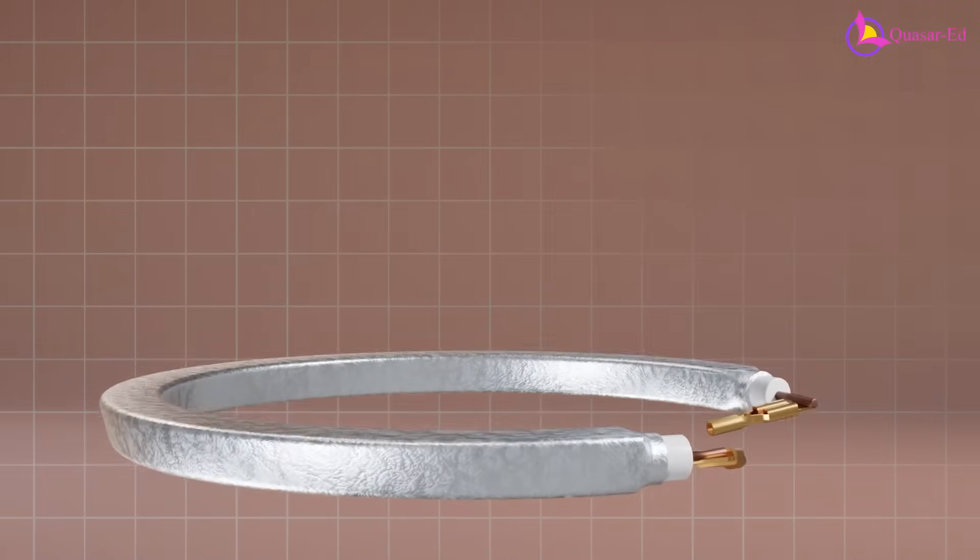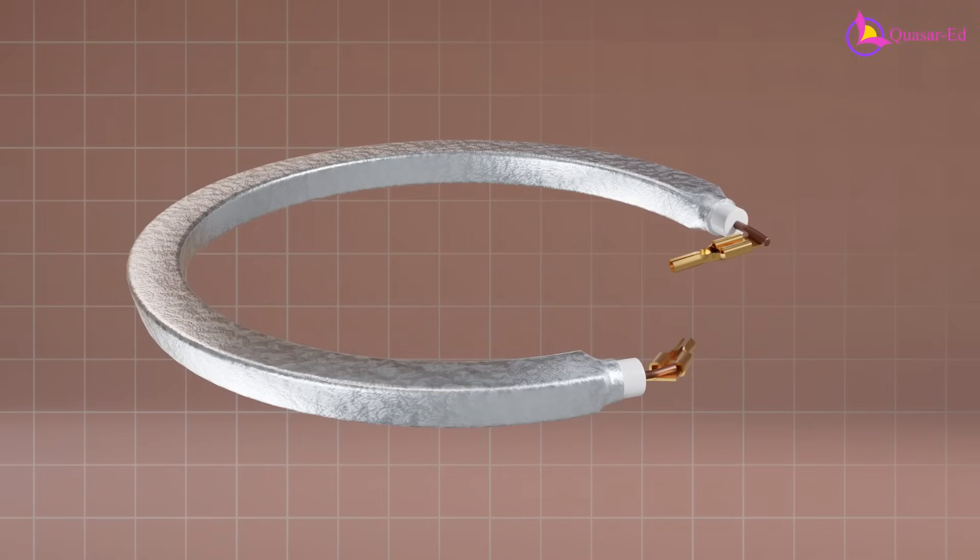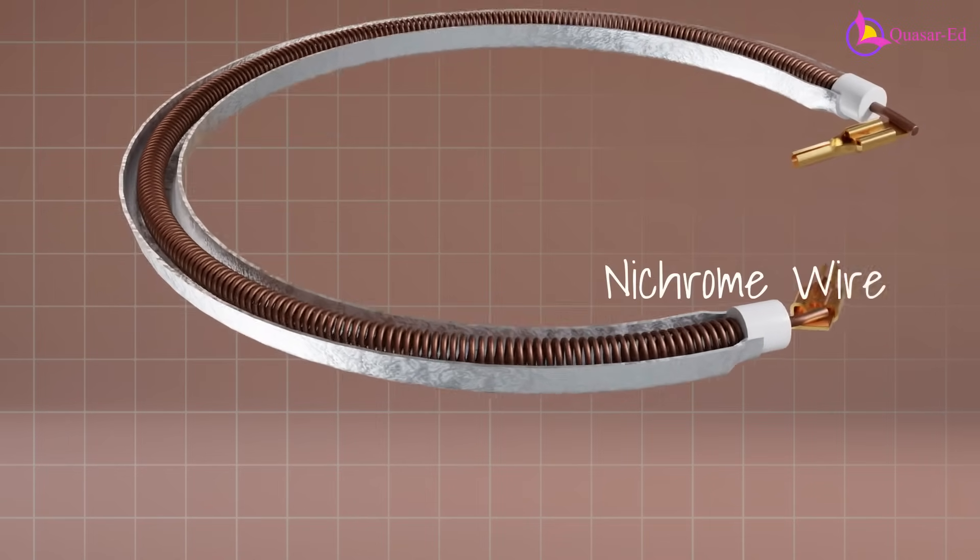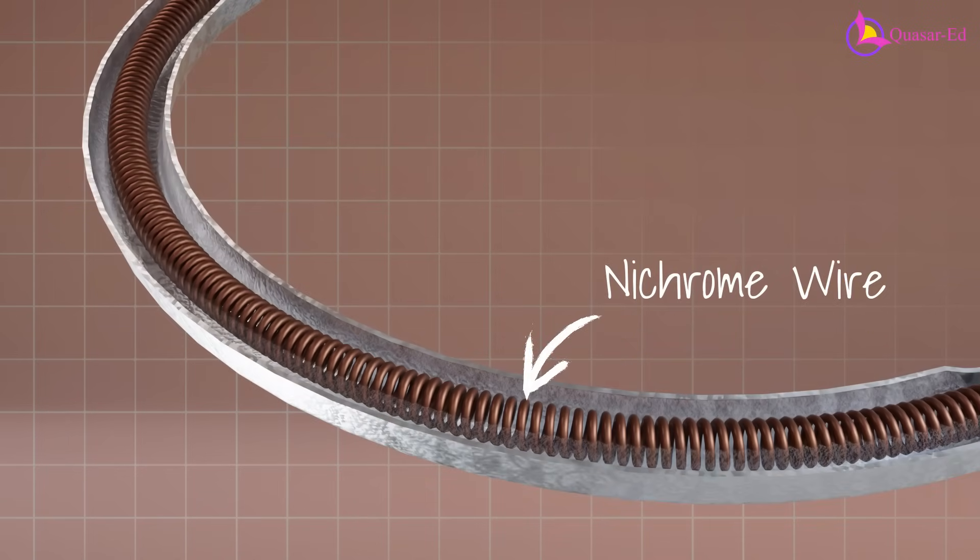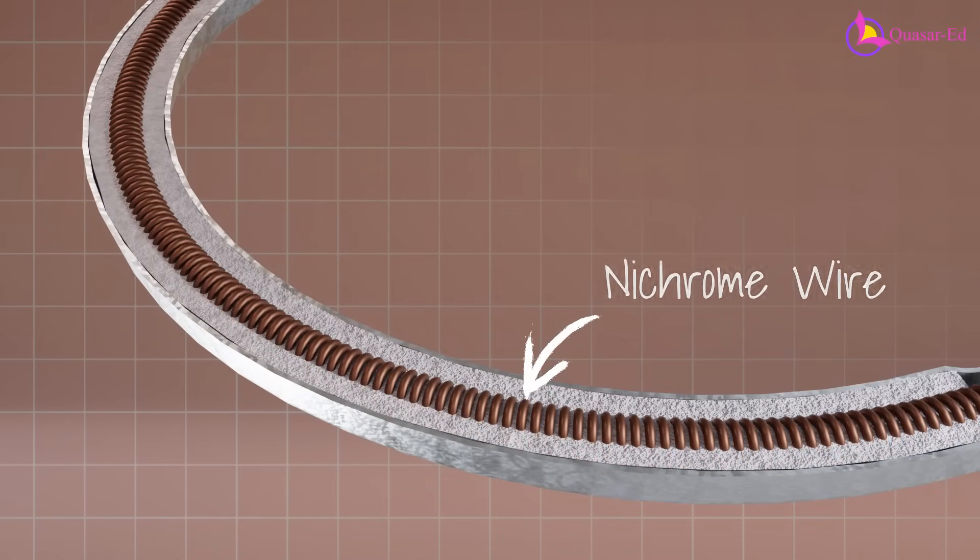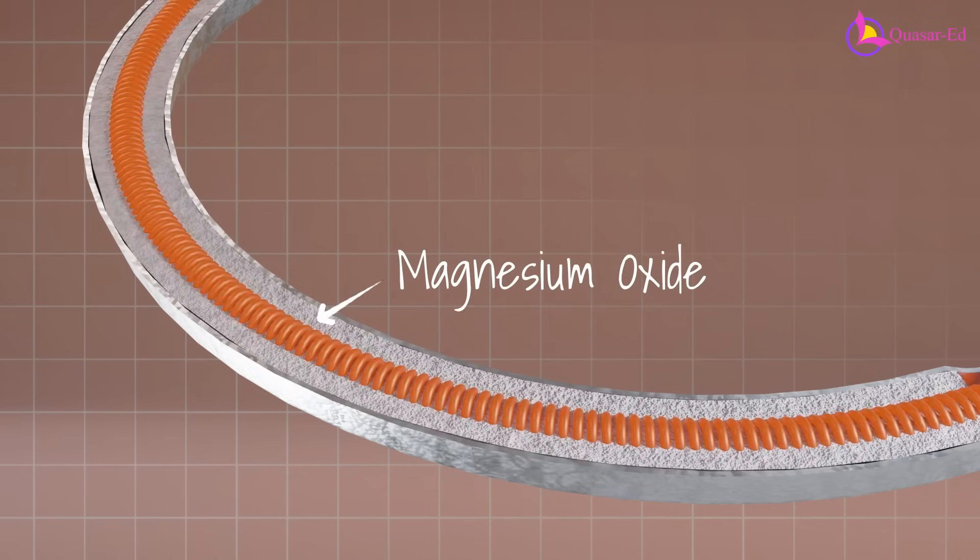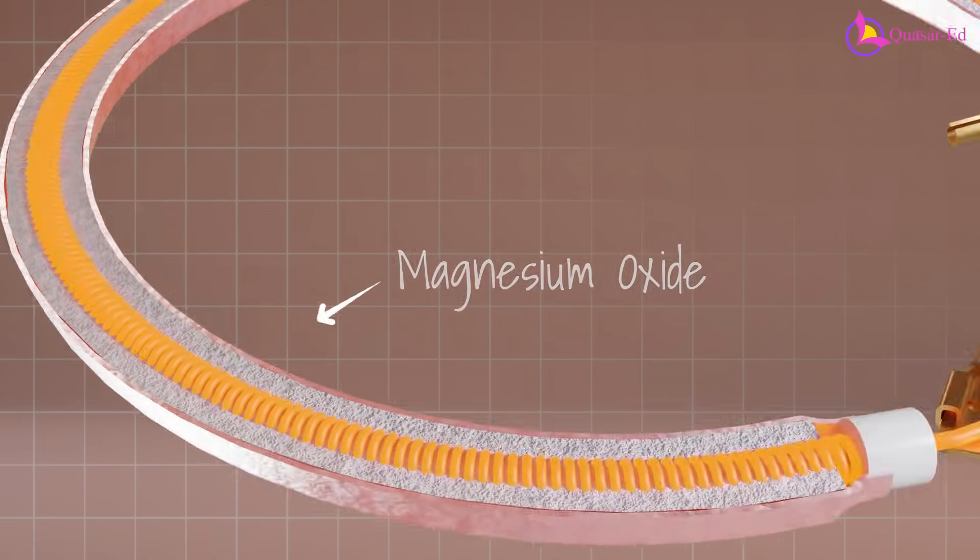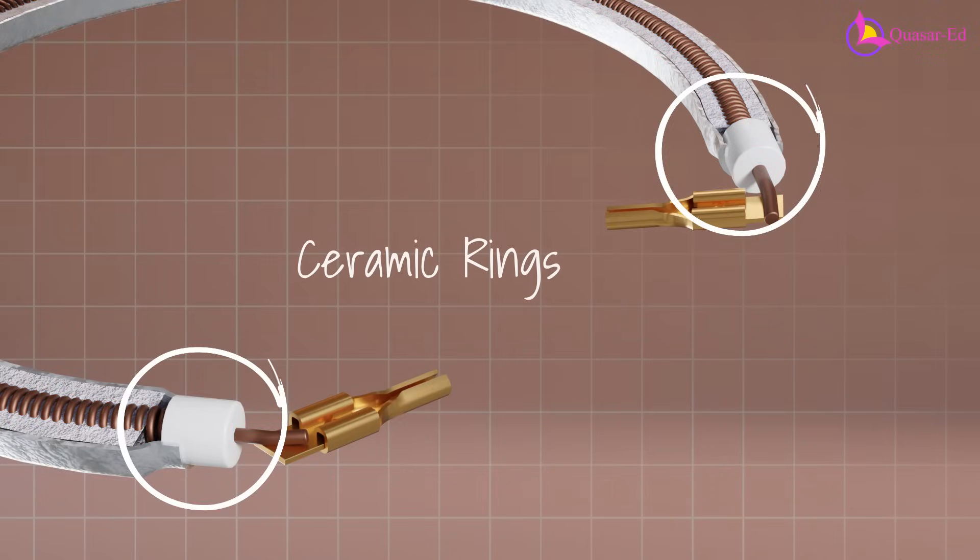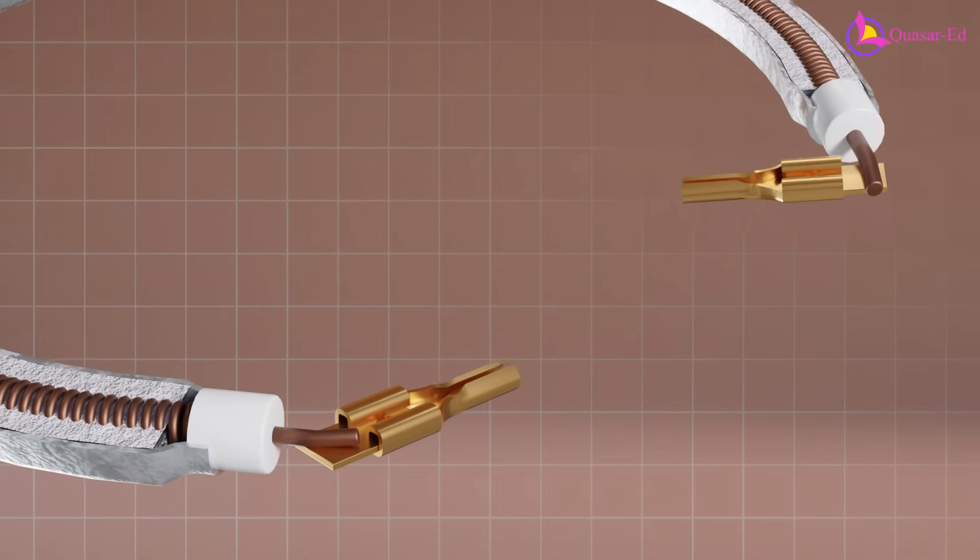The heating element itself consists of an aluminum tube housing a high resistance nichrome wire. This wire is insulated by a heat-conducting material like magnesium oxide to ensure efficient heat transfer. At the tube's ends, two ceramic rings insulate the nichrome wire to prevent contact with the metal, avoiding a potential short circuit.